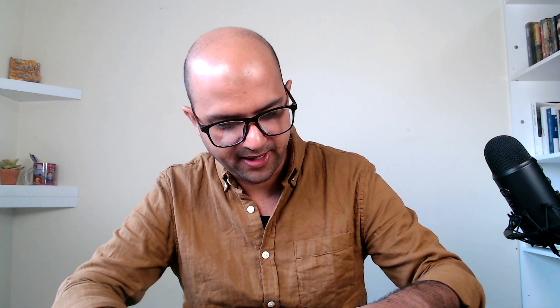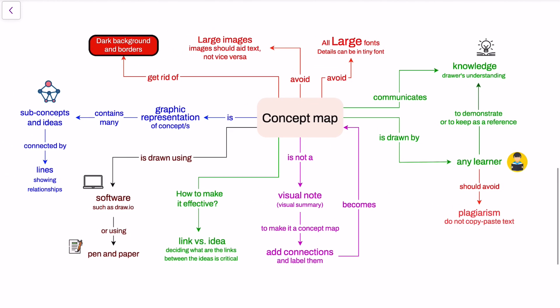Let me start by describing what a concept is. A concept is any piece of knowledge, a process or an object — this is in the context of drawing a concept map. A concept map is a conceptual diagram that depicts relationships between concepts. For example, in this concept map, which is a visual summary of what a concept map is, you can see here is the first piece of concept, here is another piece of concept, and this connector makes an association between these two.